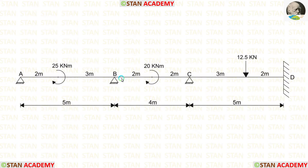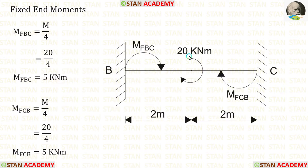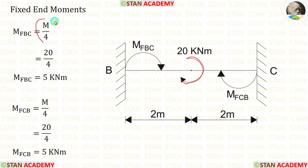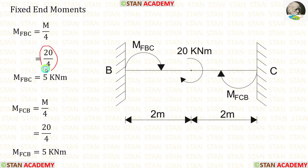Now let us find the fixed end moments in span BC. In span BC, there is a clockwise concentrated moment acting at the center. The formulas for the fixed end moments are M/4 and M/4. After applying the value of M, we get M_BC and M_CB.